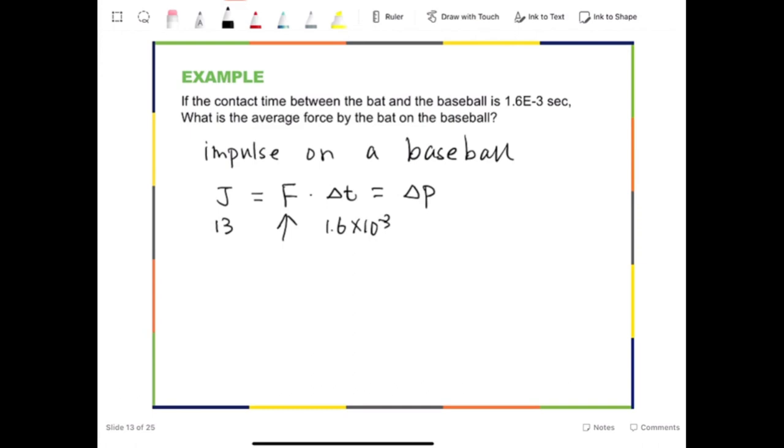Do we know change in momentum? Yes, which is same as impulse, 13. So you can find force by doing either J divided by T or delta P divided by T. So let's use the first one, which is going to be 13 divided by 1.6 times 10 to the negative third. And the answer is 8.1 times 10 to the third Newtons.